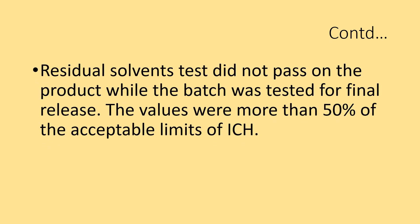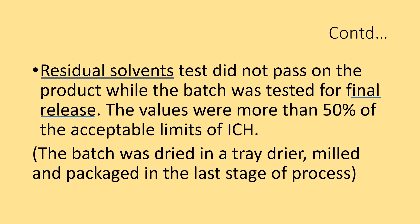Let us see another example. The residual solvents test did not pass on the product while the batch was tested for final release. The values were more than 50% of the acceptable limits of ICH. Some information on this particular deviation: the batch was dried in a tray dryer, milled and packaged in the last stage of the process.